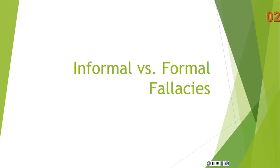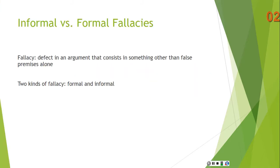If we're going to talk about informal fallacies, we have to know the distinction between formal and informal fallacies. A fallacy, broadly, is a defect in an argument that consists in something other than false premises alone. So here's one defect in an argument: a false premise. An argument might be totally flawless except that it has one false premise — we wouldn't call that a fallacy. A fallacy would be any defect in an argument that consists in something other than false premises.